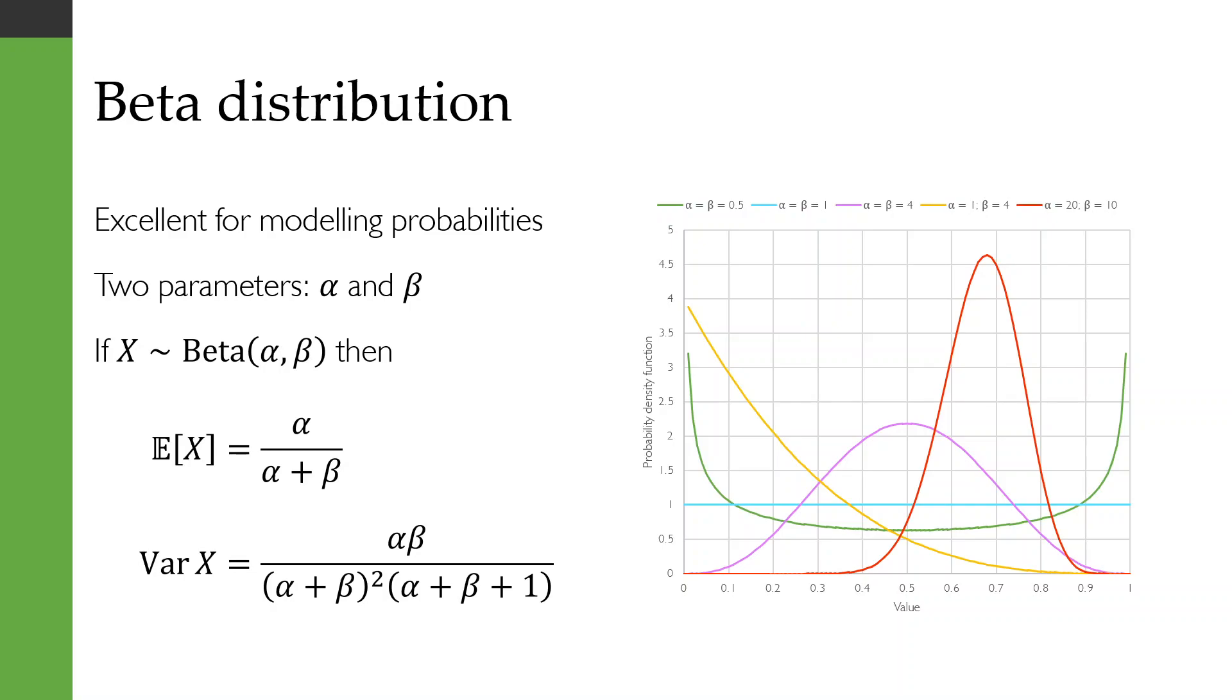The beta distribution is excellent for modeling probabilities. It has two parameters called alpha and beta, and if x is distributed according to the beta distribution with parameters alpha and beta, then its expected value is alpha divided by alpha plus beta, and its variance is given by this formula in the bottom left.